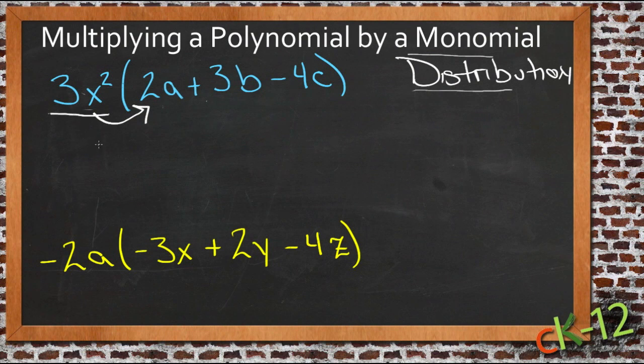We get 3 times 2 and that's 6. And then x squared times a is just x squared times a because those don't combine, they're different factors.